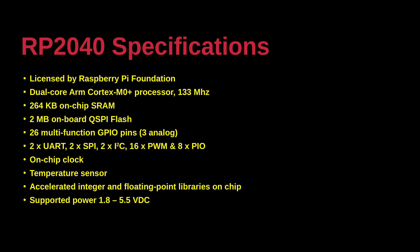Further specifications include 26 general purpose input output pins of which three are available for analog use, 2 universal asynchronous receiver transmitters, 2 serial peripheral interfaces, 2 inter-integrated circuit interfaces, 16 pulse width modulation channels, 8 processor input output, an on-chip clock, a temperature sensor, and accelerated integer and floating point libraries on the chip. The operating power range is from 1.8 to 5.5 volts DC.